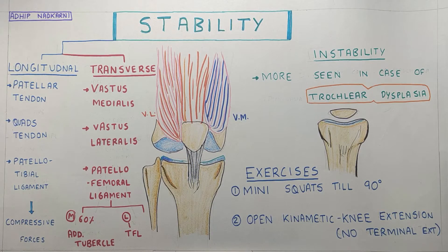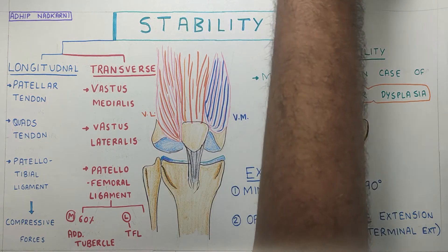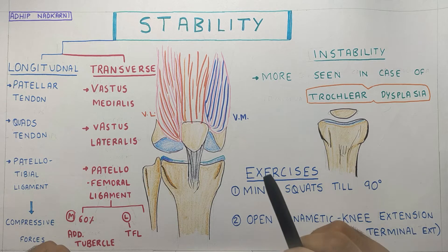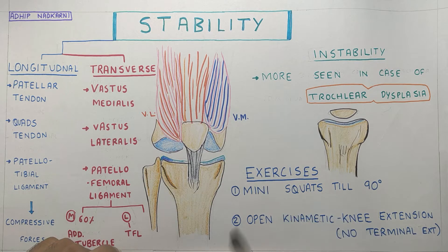In this video, we are going to talk about the structures that influence the stability of the patella — the transverse and the longitudinal structures. We will also talk about the Q angle and the factors that influence it, and finally discuss the exercises for instability of the knee joint.